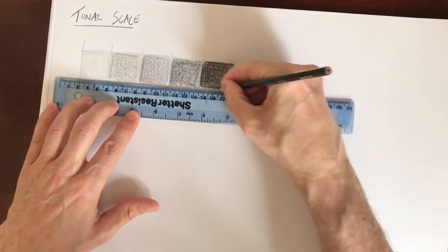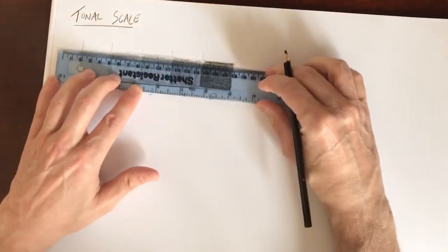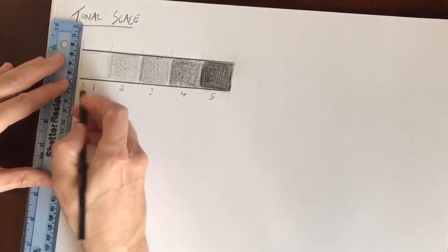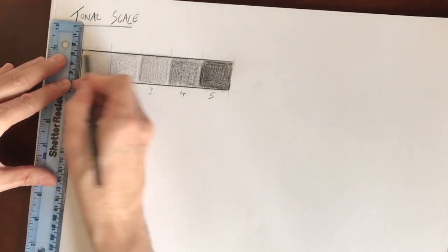Once you've rendered it, if you could get a straight edge or a ruler and darken an outline, that just gives a neater appearance to the tonal scale.